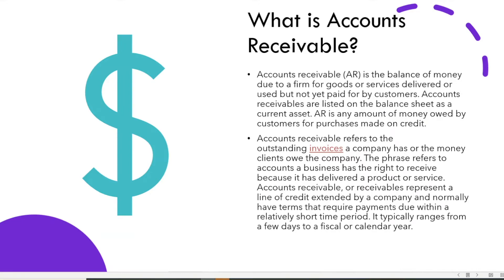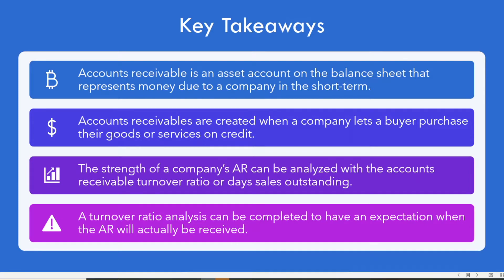Payment terms typically range from a few days to a physical or calendar year. The key takeaways of Accounts Receivable: it is an asset account on the balance sheet representing money due to a company in the short term. Accounts Receivables are created when a company lets a buyer purchase their goods or services on credit. The strength of a company's AR can be analyzed with the accounts receivable turnover ratio or days sales outstanding. A turnover ratio analysis can be completed to set an expectation of when the AR will actually be received.